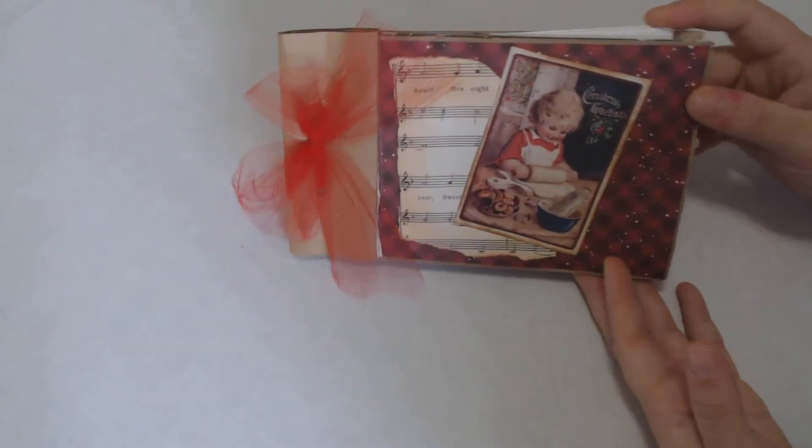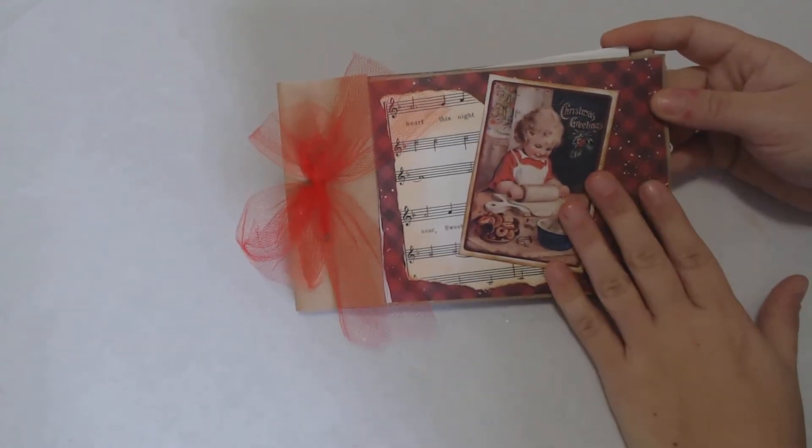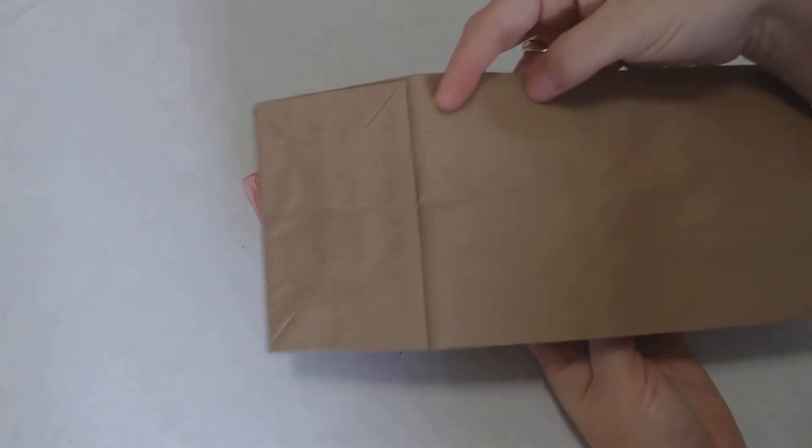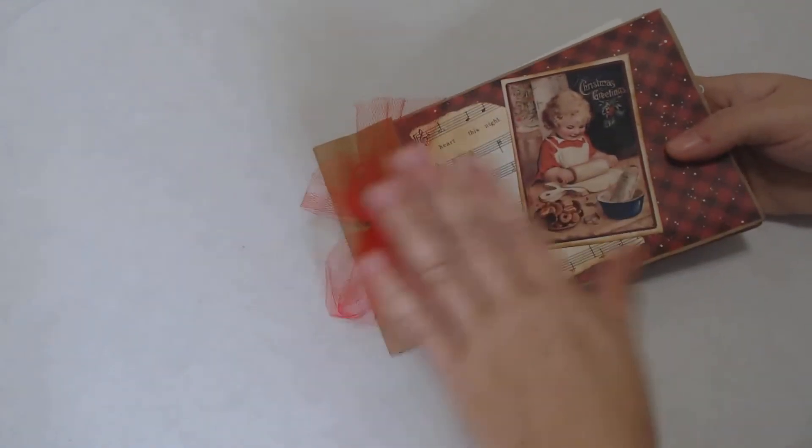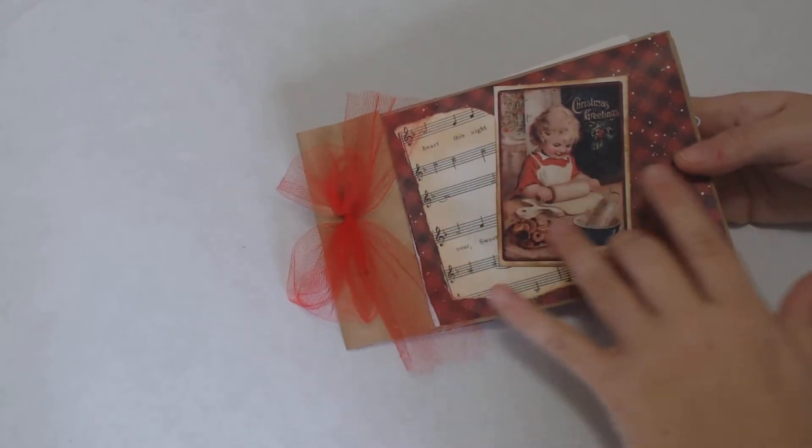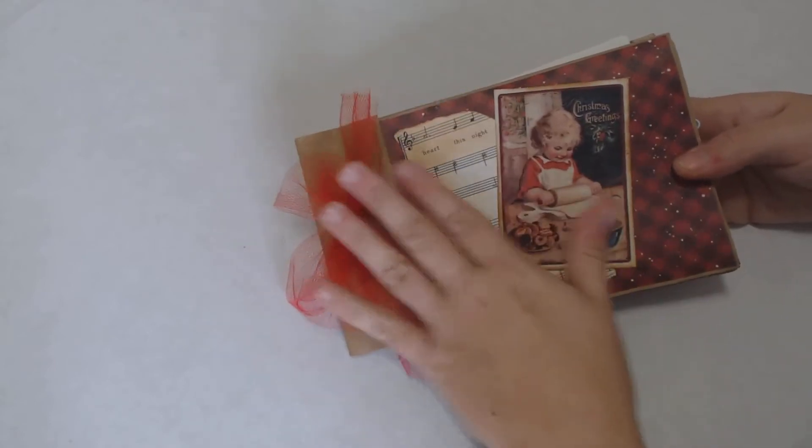This right here is a recipe journal. It's only four pages and it's made from some lunch bags. I'm going to show you how to do that at the end. I wanted to use up some scrapbook paper that I'd had for a while and also use up some of my junk journal scraps and bits and pieces.